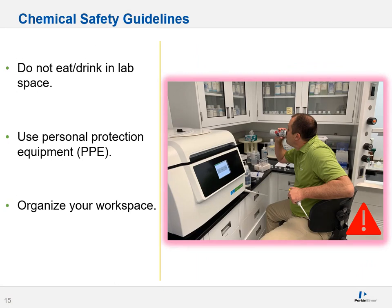A couple of chemical safety guidelines: do not eat or drink in lab space. All it takes is sometimes a drop of a lethal chemical to fall in your water or coffee, and perhaps it doesn't manifest right away — it manifests years later. Please use personal protective equipment, also known as PPE. Finally, organize your workspace. There are pipette tips exposed and lots of things to jab yourself or spill on yourself. Organization is key, especially when working with anything toxic or biologically hazardous, so your workplace is laid out clearly so you're not knocking over dangerous items.